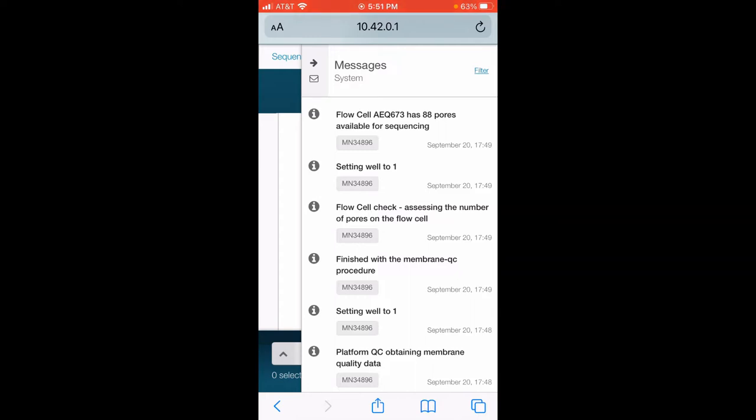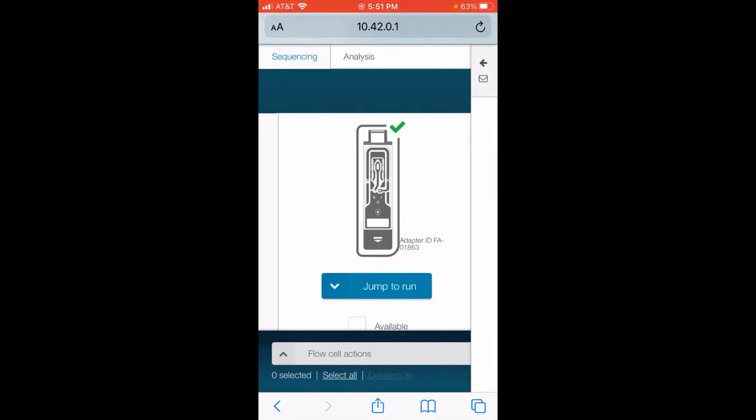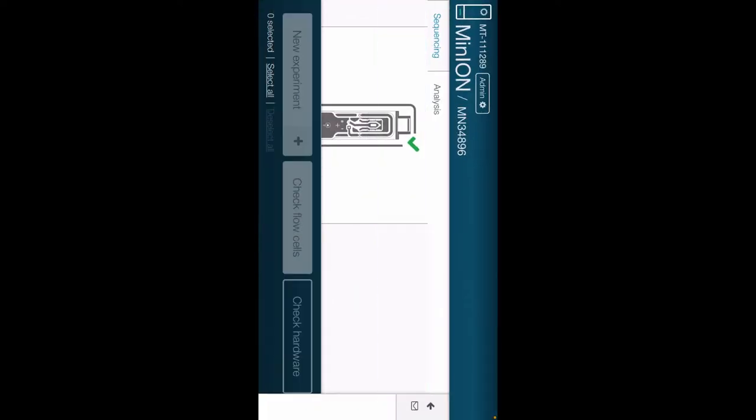What I want to do now is show you how to set up that sequencing run. So I'm going to go ahead and rotate this and click on MN34896 till it turns green, then click on new experiment.